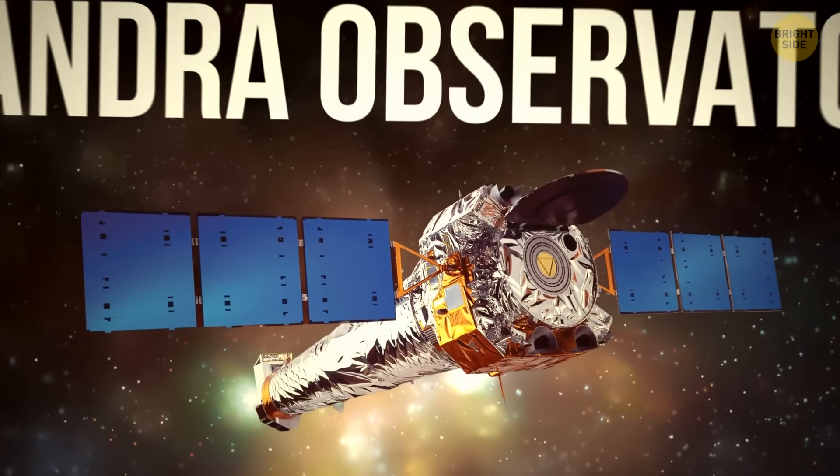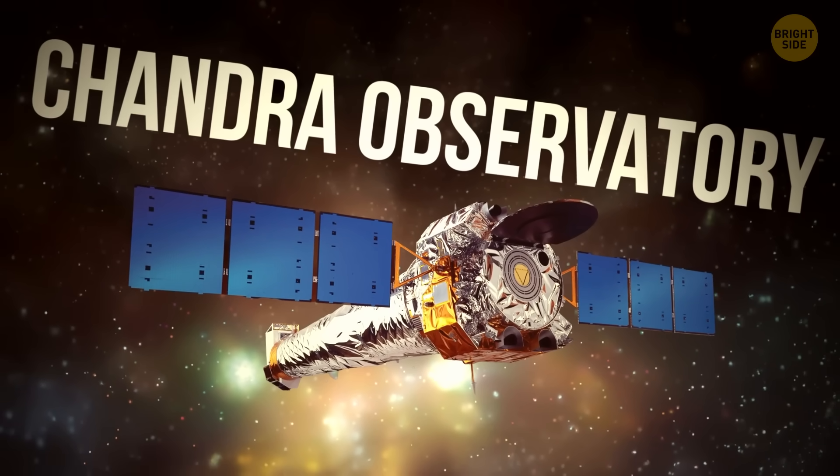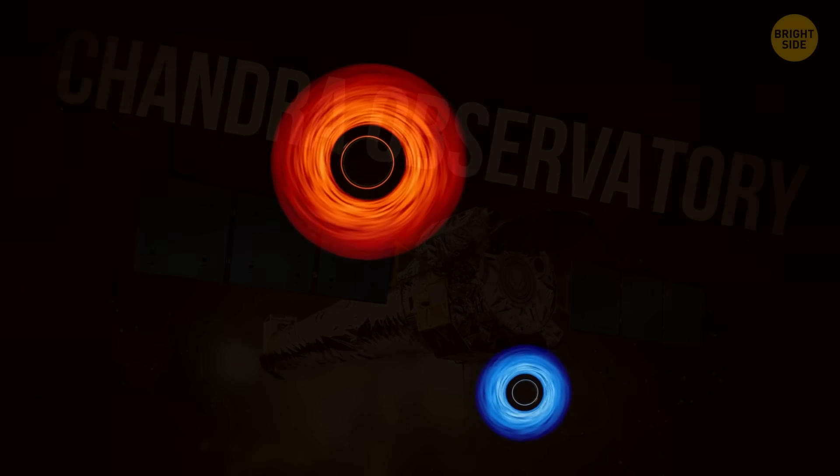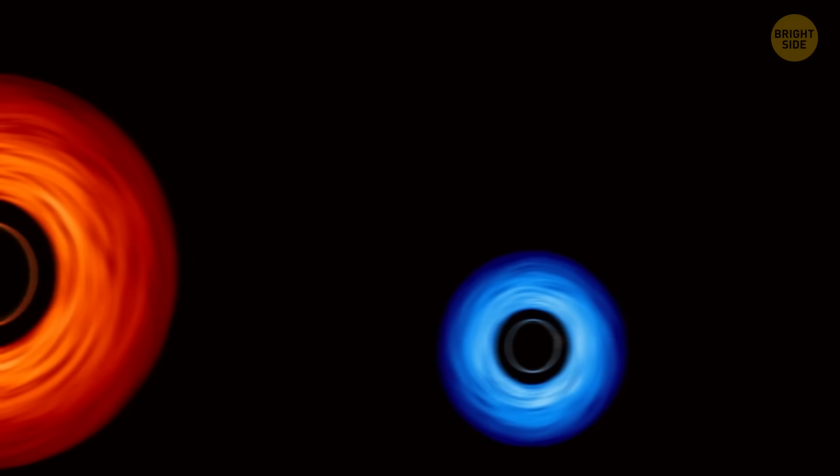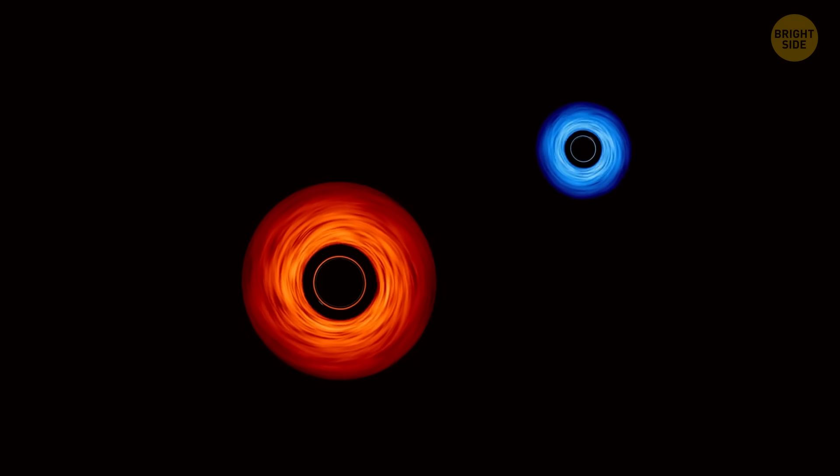The discovery was made using NASA's Chandra X-ray Observatory. One black hole weighs about 30 million times the mass of the sun, while the other has at least 1 million times the mass of the sun.